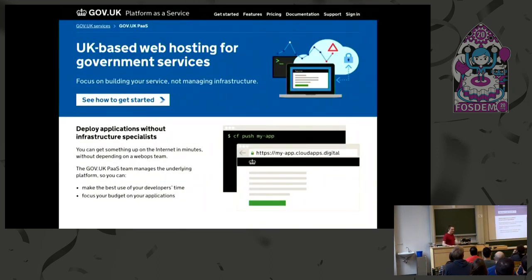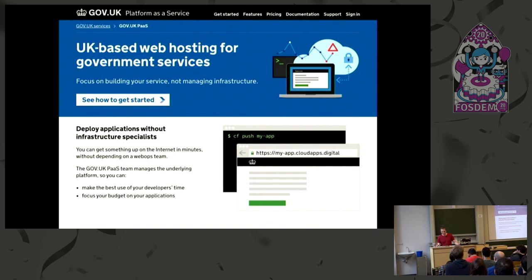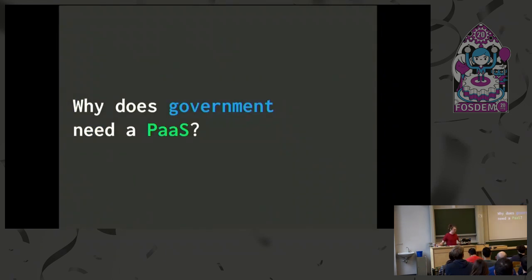This is our website — UK-based web hosting for government services. There are many other government PaaS offerings: there's cloud.gov in the US, one in Australia, and others across Europe. Sweden's looks pretty legit. You can check us out at www.cloud.service.gov.uk — all the links are on the talk page on FOSDEM. Now let's answer: why does government need a PaaS? What are the unique challenges that a typical private sector organization might not have?